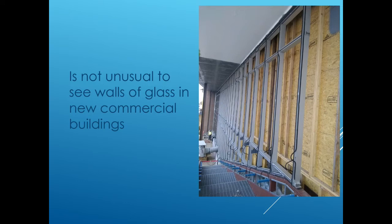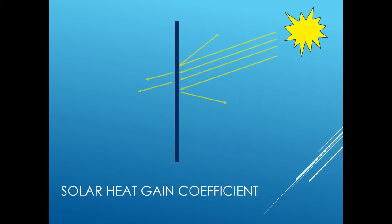It is not unusual to see walls of glass in new commercial buildings — here we have a curtain wall assembly under construction without the glass installed. Fenestrations can be thought of as the weak link in the thermal envelope. An outstanding commercial window may have an R-value of R3 to R4, compared to walls of R20 and better. Just as important — perhaps more important than the U-factor — is the solar heat gain coefficient. A window with a solar heat gain coefficient of 0.5 means 50 percent of solar gains are reflected back outside. In many buildings, solar heat gains represent the largest load when sizing air conditioning equipment.